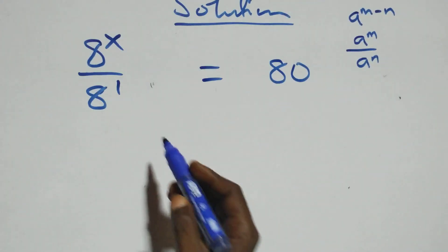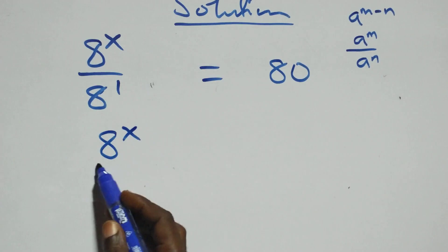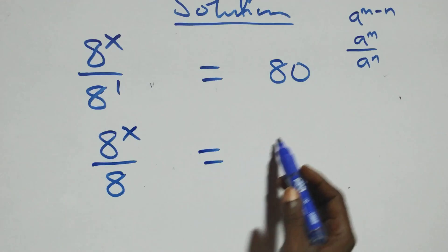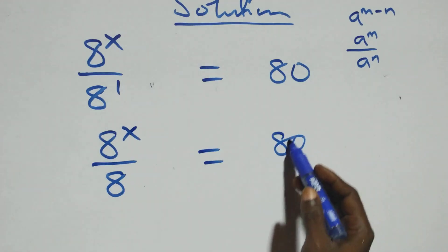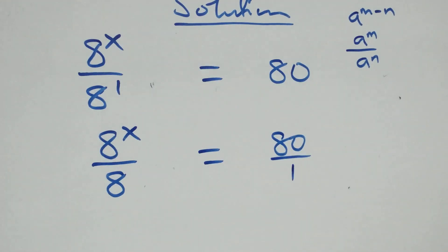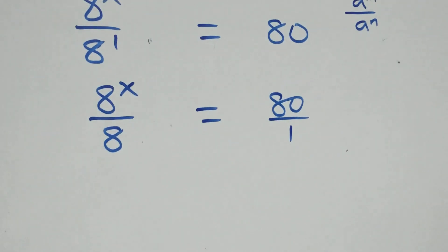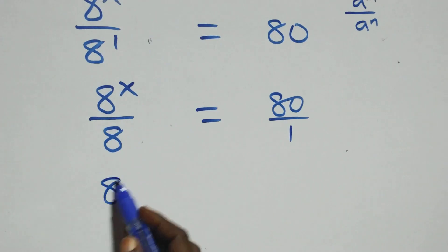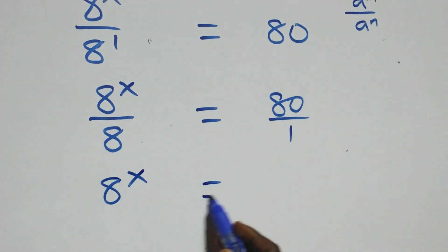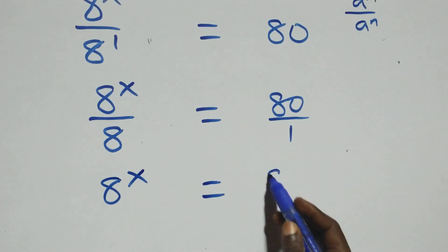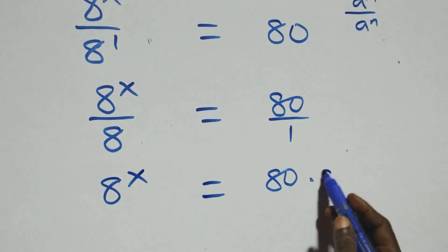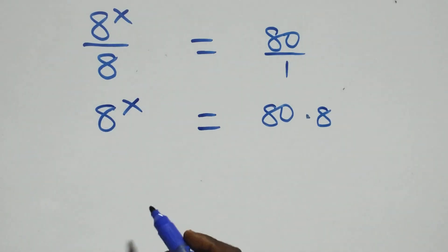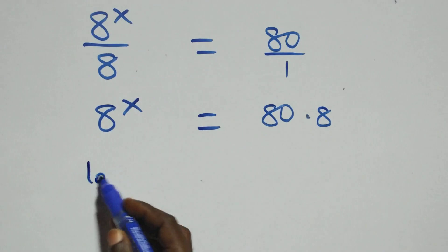We can write this as a raised to power x over a raised to power 1 equals 8, then equals 80 over 1. The next step, we cross multiply: a raised to power x times 1, which is the same as a raised to power x, equals 80 times 8 on this side.